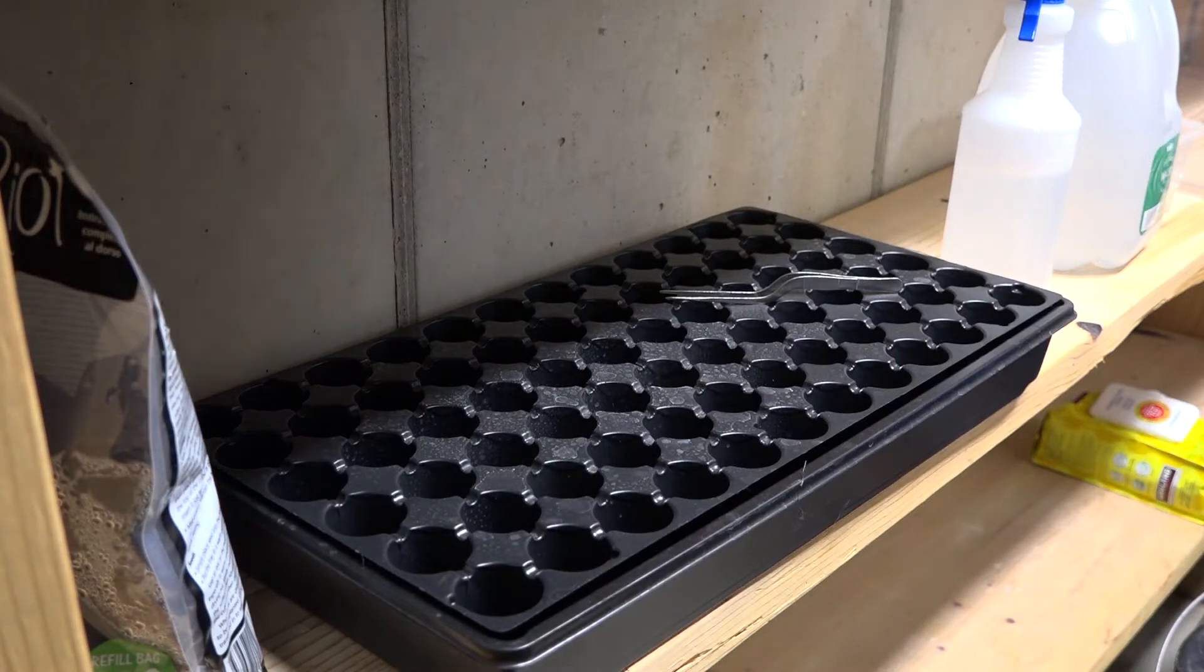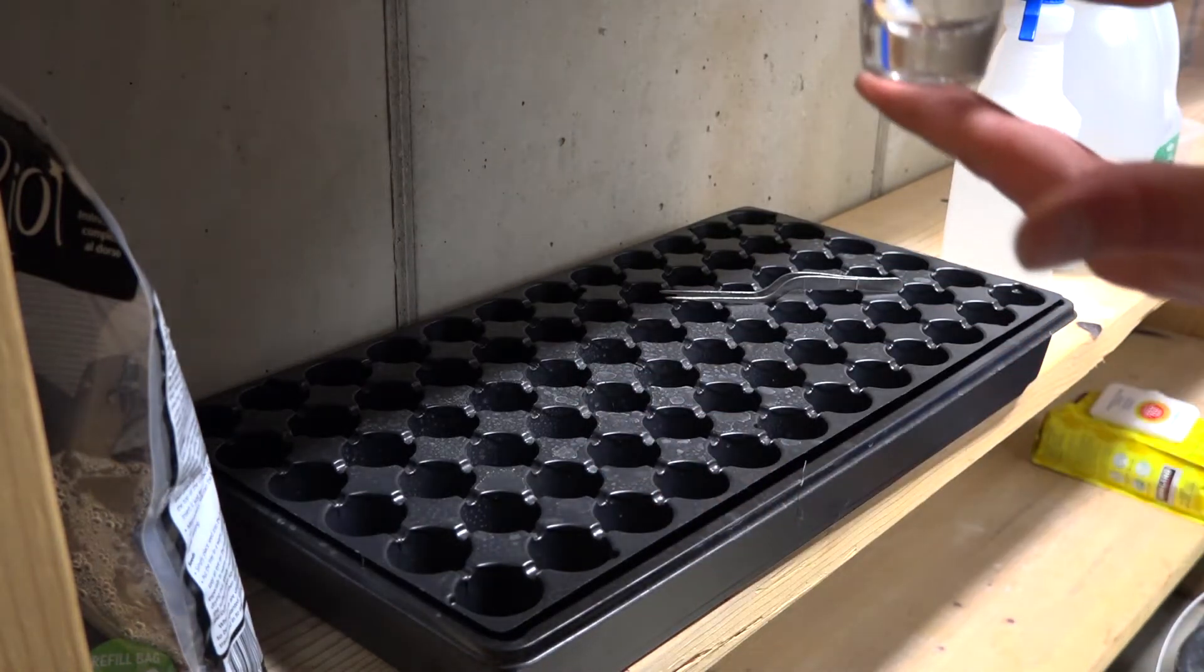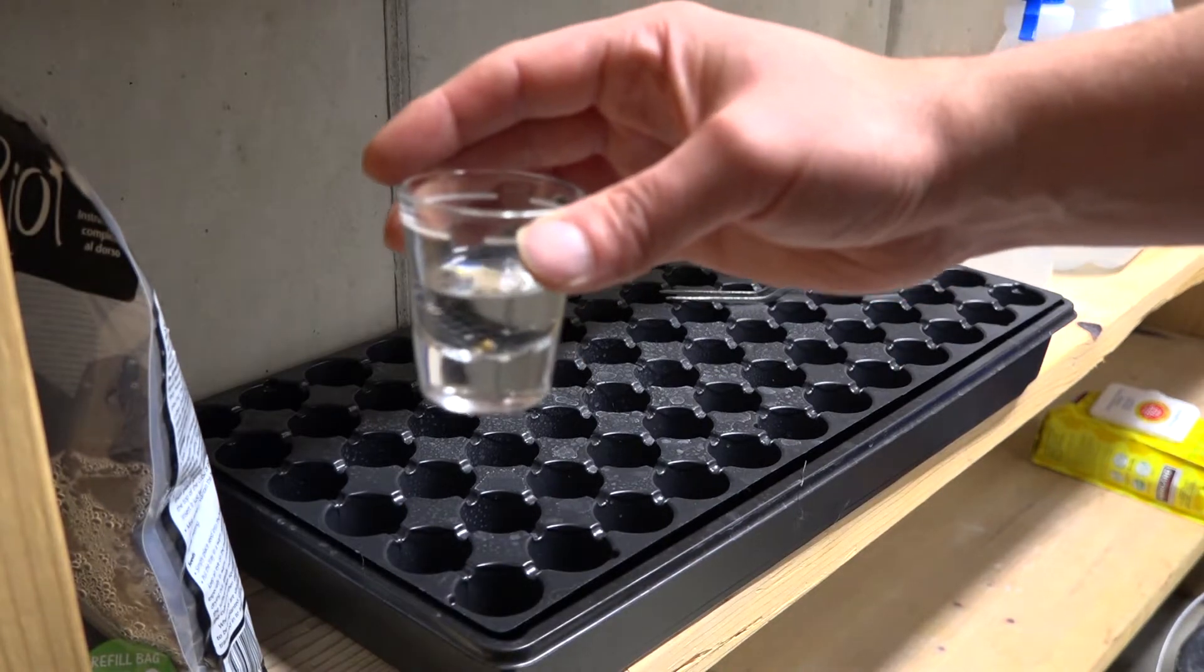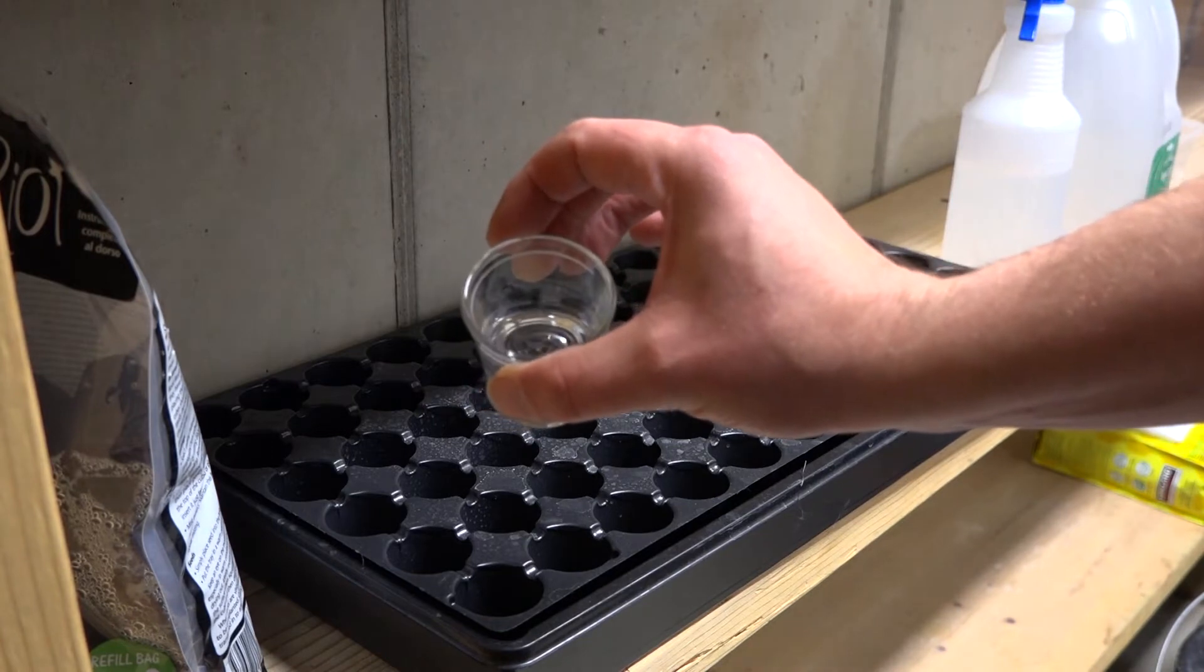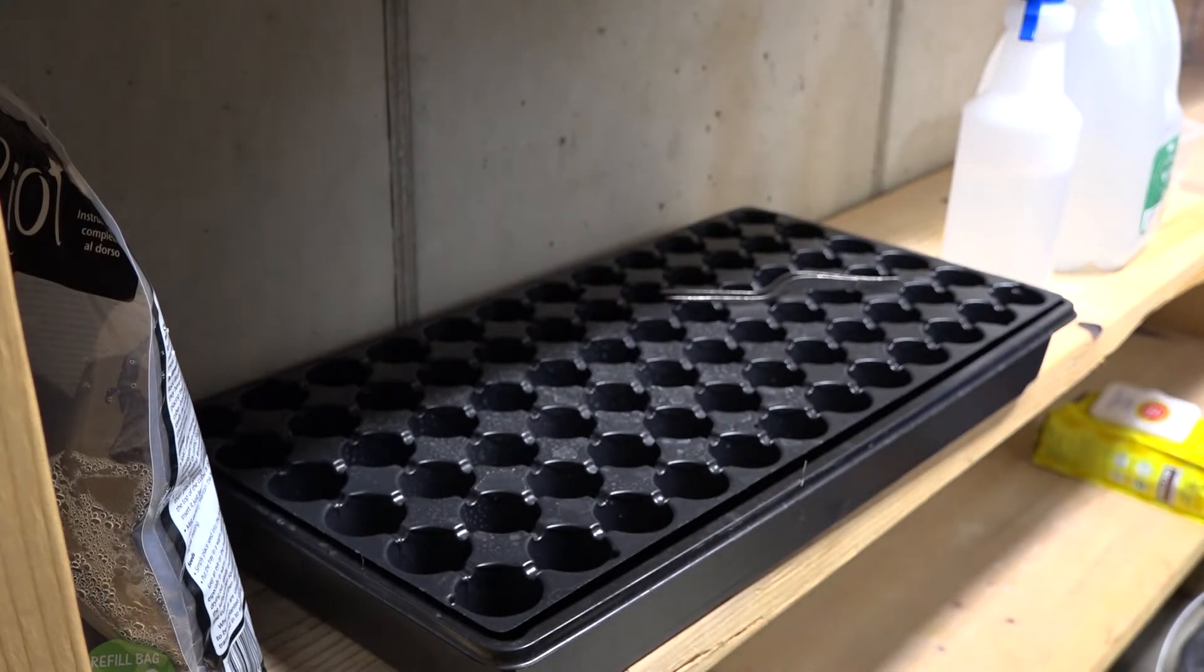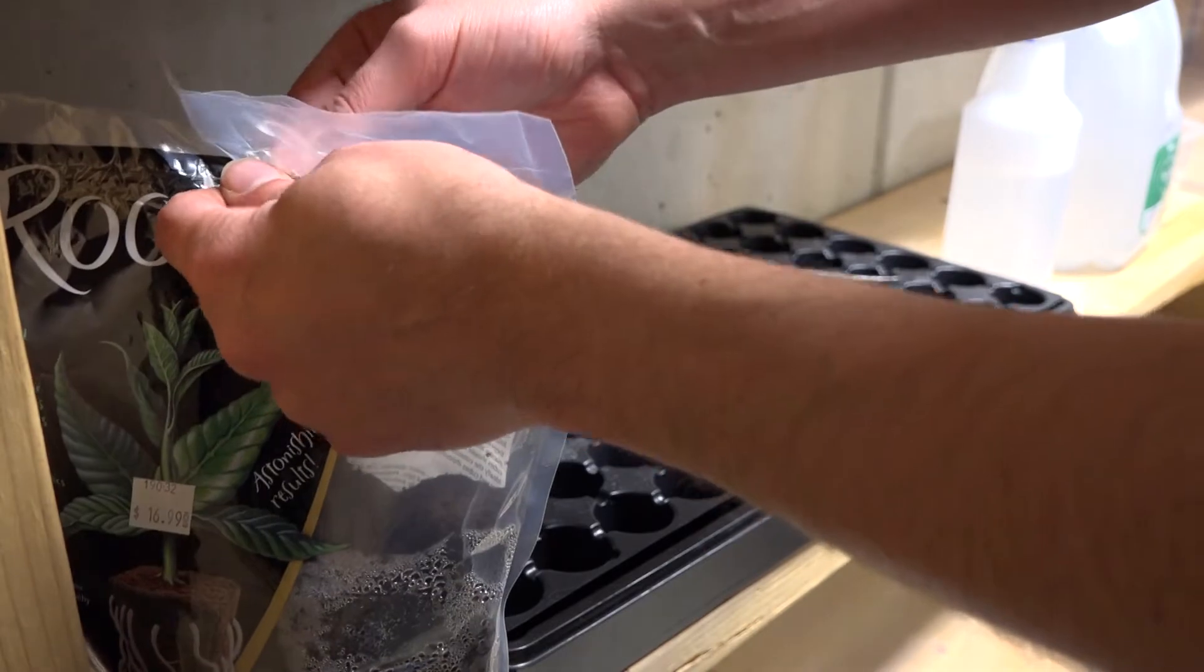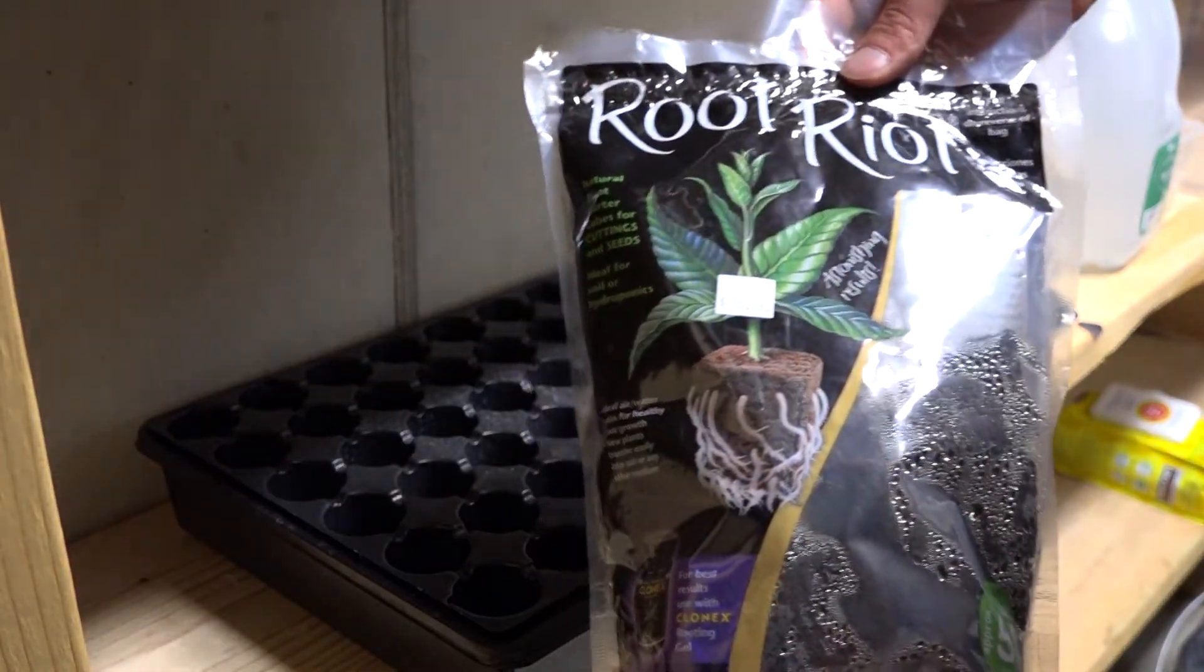Okay, so we're going to do a quick video on how to transplant the germinated seeds. You can see the taproot has sprouted on both the seeds that we used yesterday, and so we're going to put them into the next medium. We're going to be using the Root Riot cubes.